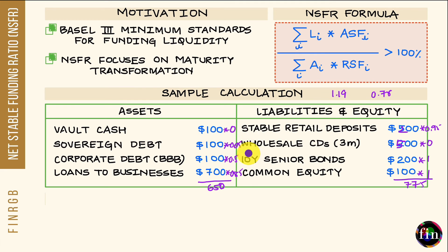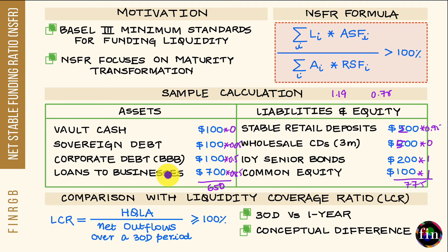This example shows how the NSFR helps prevent excessive maturity transformation. Before concluding, let's quickly compare the NSFR with the other standard introduced under Basel III — the LCR, or Liquidity Coverage Ratio.